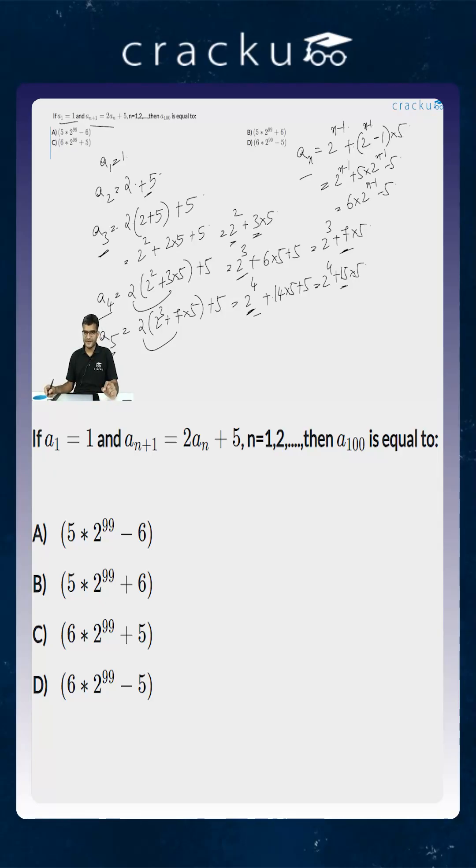Now if you substitute the value of n to be equal to 100, the value of A₁₀₀ is equal to 6×2⁹⁹ minus 5. So the correct answer is option D.